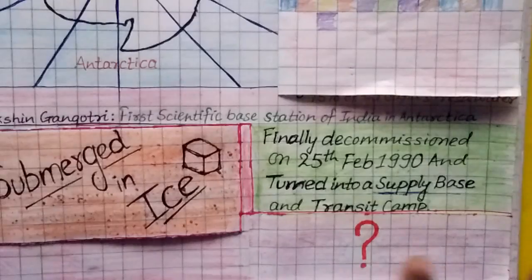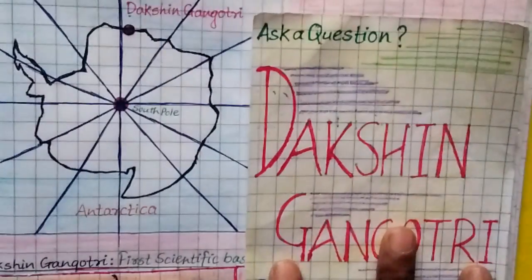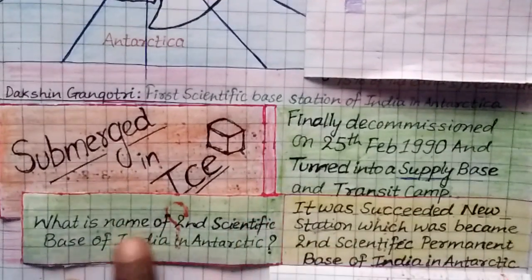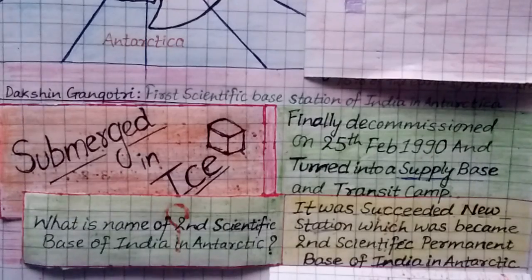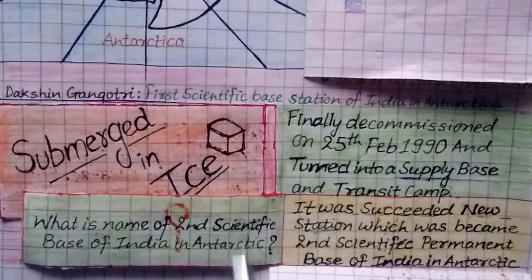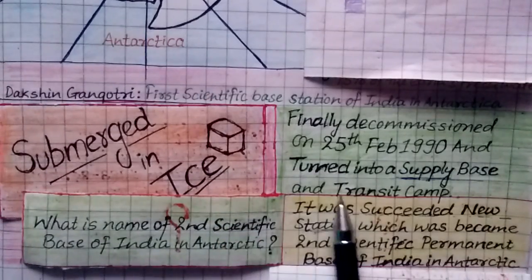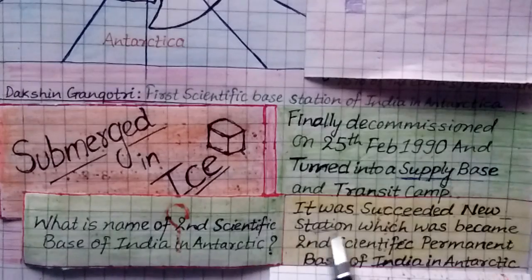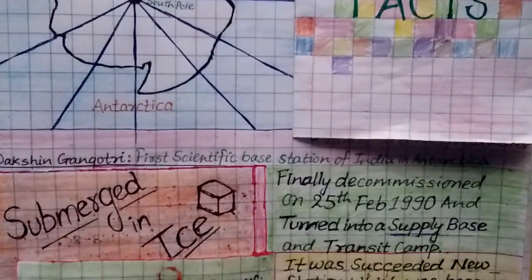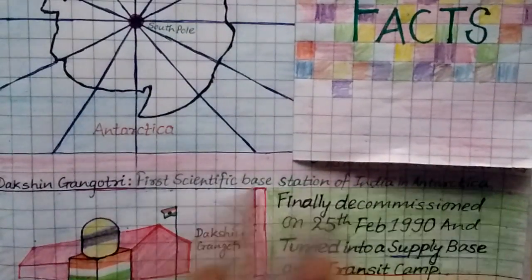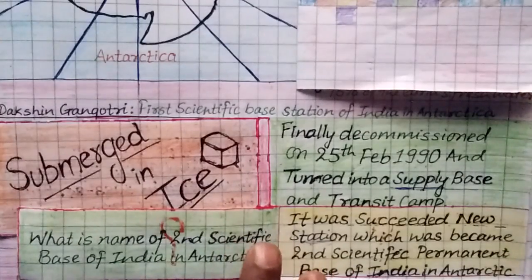Today I covered the topic of Dakshin Gangotri. My question for you is: what is the name of the second base of India in Antarctic? Dakshin Gangotri was succeeded by a new station which became the second permanent scientific base of India in Antarctic. Please give me the answer in the comment box — I will reveal the answer in my next video.